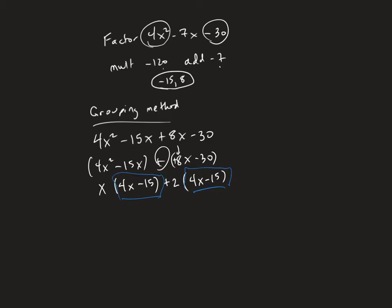If they don't look exactly the same, you either have to check your math or you've chosen the wrong numbers. Now, what we're going to do is take this thing right here and this thing right here. You notice they both have a 4x - 15 in them. So I'm going to pull that out in front like a common factor.